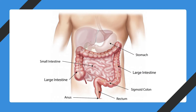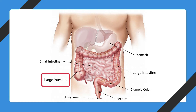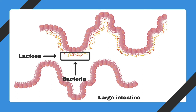When lactose is not digested in the small intestine by lactase, it continues moving through the intestine. Eventually it reaches the large intestine, where two main events occur. The first is that the lactose draws water into the intestine from the body, which causes the diarrhea. The second is that the bacteria that live in our intestine break down the lactose for themselves, and in doing so, release gas. This leads to bloating and flatulence.